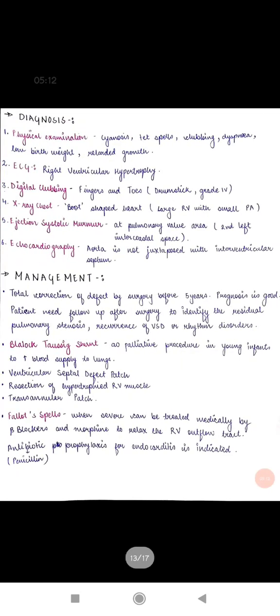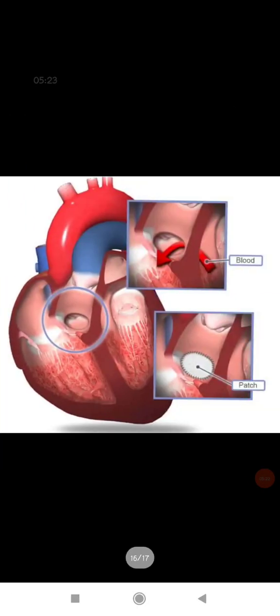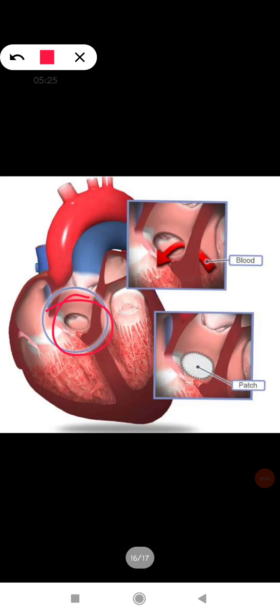We can apply a patch to the defect so that mixing of blood won't take place. Here we can see this is the defect. Here the mixing of blood was taking place along the defect and in surgery we have applied a patch, we can say ventricular septal patch over this defect.